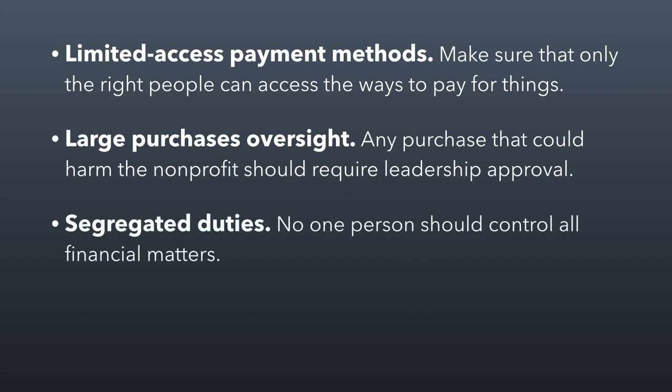Another important principle in financial control is to make sure that duties are segregated, meaning that no one person should control all financial matters, even the executive director. There might be situations where the board should be involved before a financial strategy is pursued or before a large purchase is made. You shouldn't have people processing payroll for themselves. You shouldn't have people processing reimbursements for themselves. You basically want to break out the duties so that the financial process is seen by more than one person.